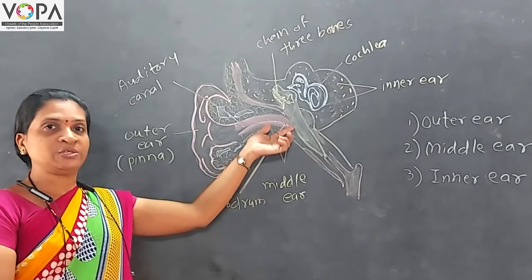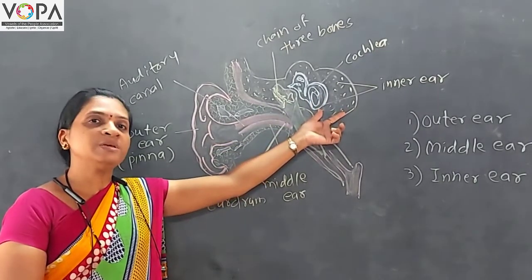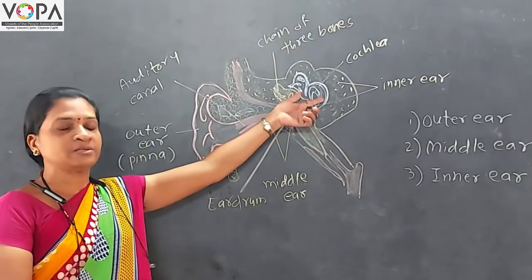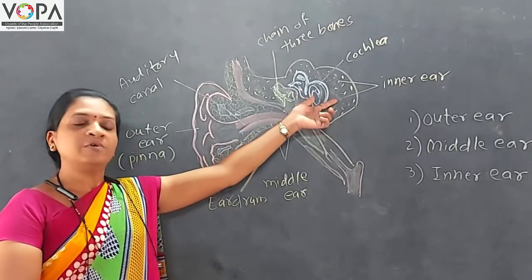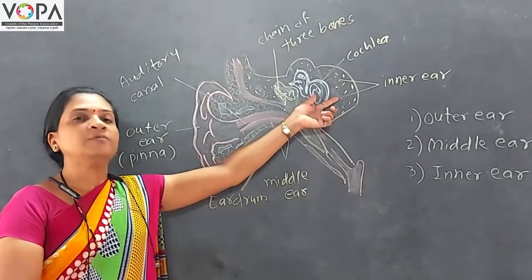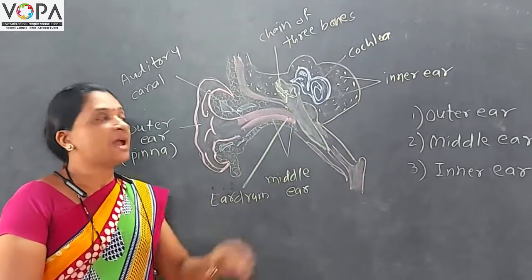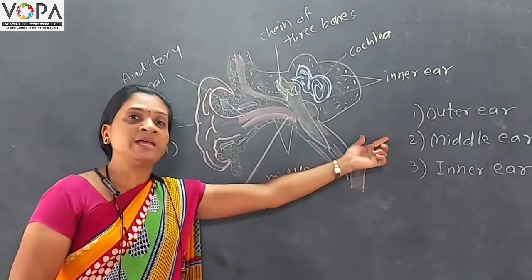And here, this vibration then recorded by inner ear. This vibration recorded by this shell-like structure is known as cochlea. And here, what happens exactly - this vibration is converted into electrical signal. And this electrical signal now transmits towards the brain, where the brain analyzes this signal and we can hear the sound.